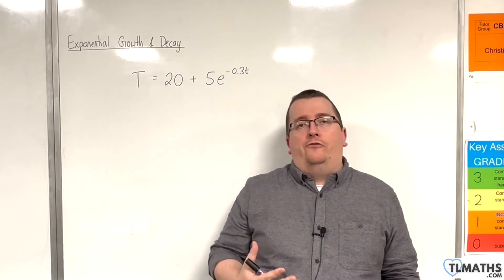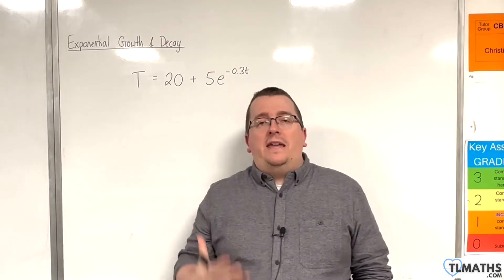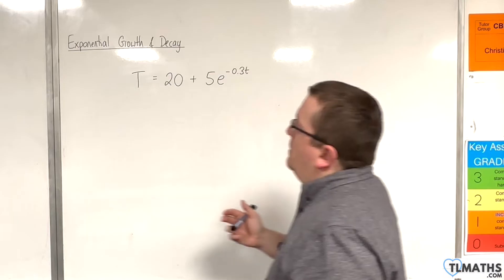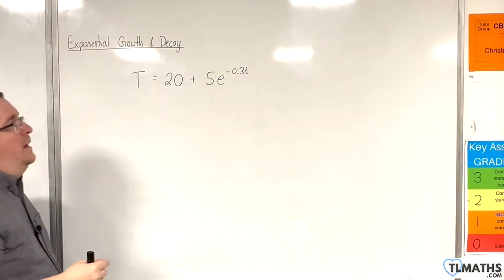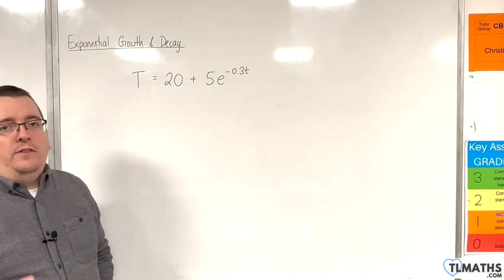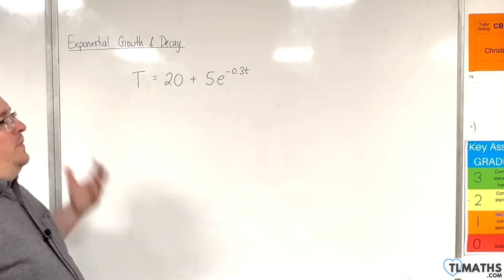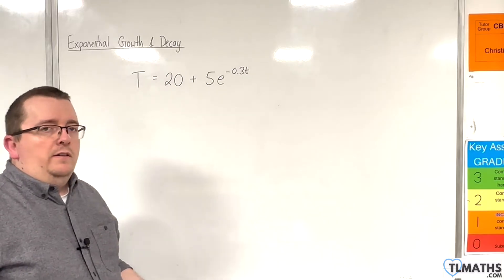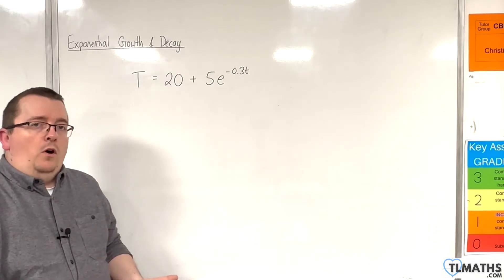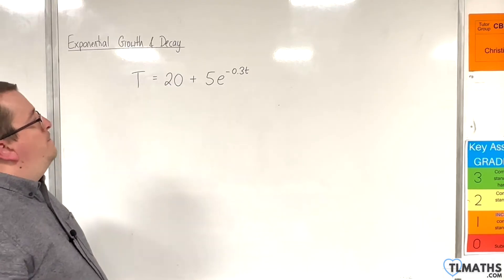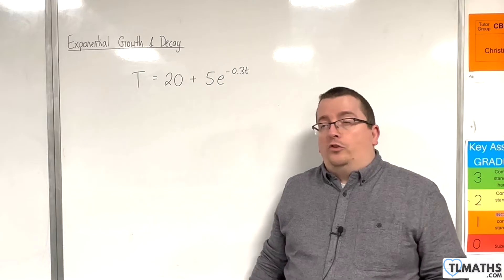In this video I want to tackle a certain phrase you may see in exponential growth and decay problems, and that is concerned with long-term behaviour. Here is an example formula for temperature — I'll use capital T for temperature and lowercase t for time. This describes perhaps a cup of tea that is cooling, giving the temperature over time. If I was asked about the long-term behaviour, I'd be considering: what is the long-term temperature of the cup of tea, and as time goes on, what temperature is it tending towards?